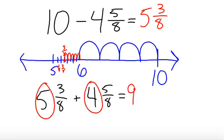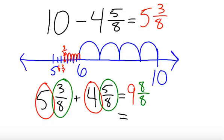And I'm going to add the parts. Three eighths plus five eighths equals eight eighths. But I know that eight eighths is the same as one whole. So this is really nine and one whole, which is the same as ten wholes. Since that was my starting number, I know that five and three eighths is the correct answer.